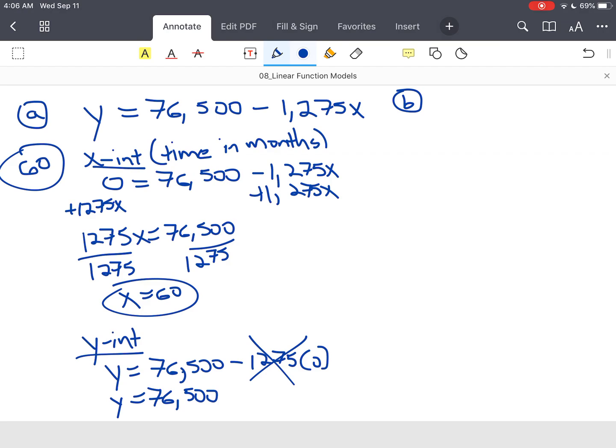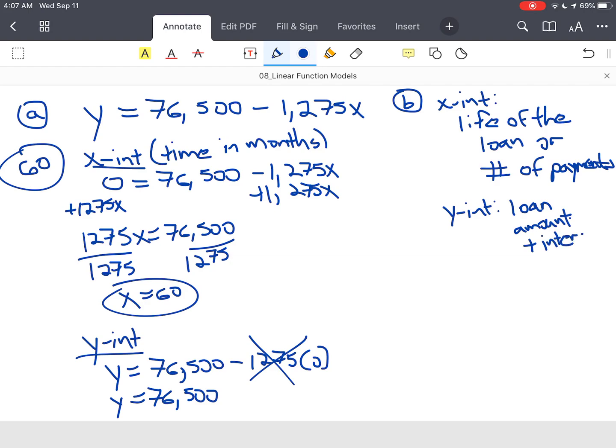Question B was interpret the intercepts in the context of the problem. We kind of did that. Your x-intercept, some people call it the life of the loan, which simply means how long it took to pay off. Or you could just simply say number of payments. Y-intercept is simply the loan amount plus interest, which was that $60,000 plus that $16,500. Real simple.